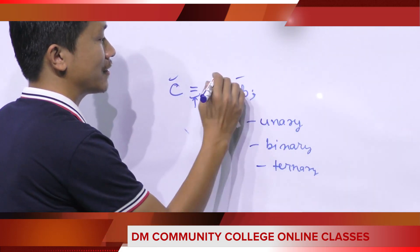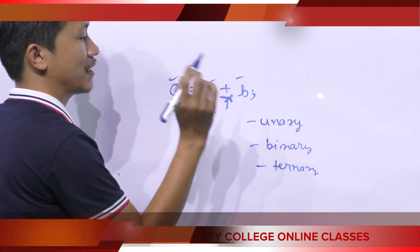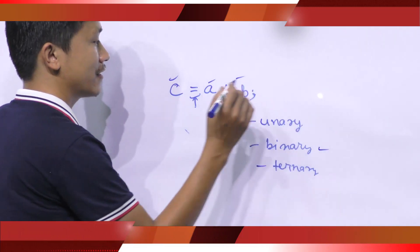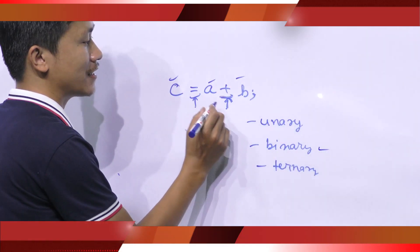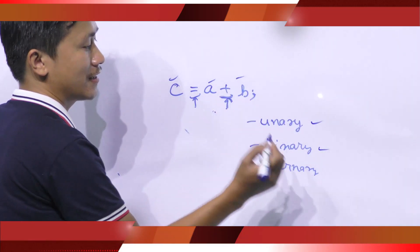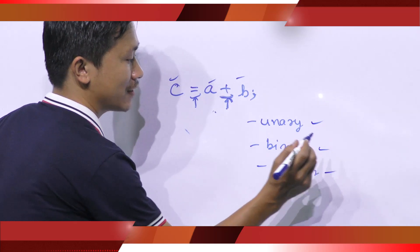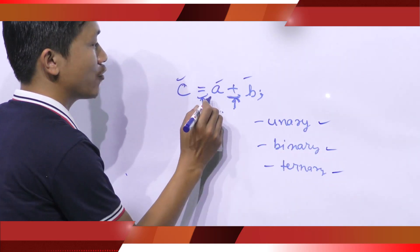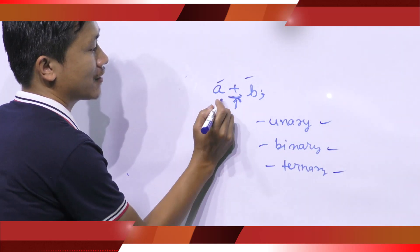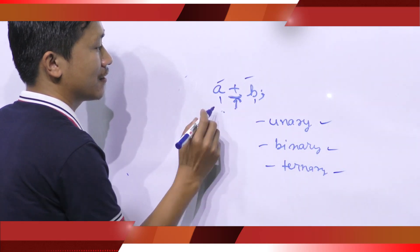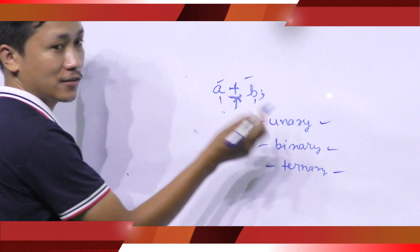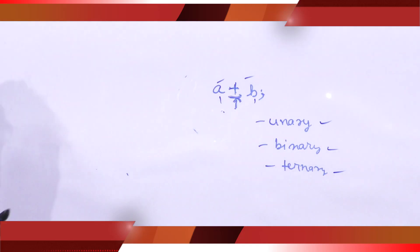If an operator takes two operands, then it is binary. If an operator takes one operand, then it is unary. If an operator takes three operands, then it is ternary. For example, this addition operator takes two operands; therefore, this addition operator is a binary operator.